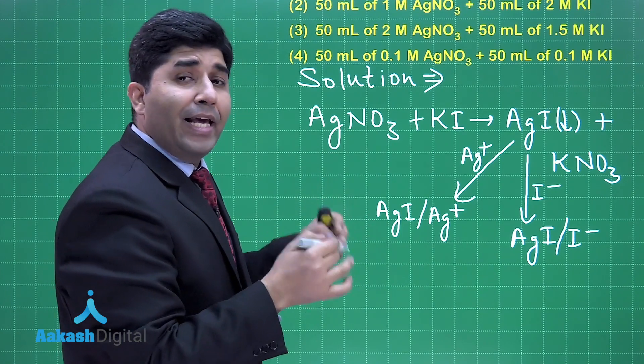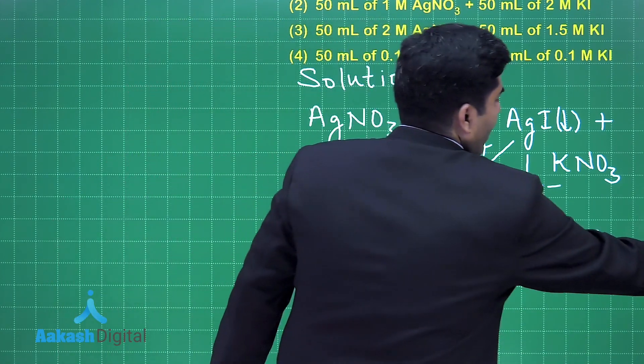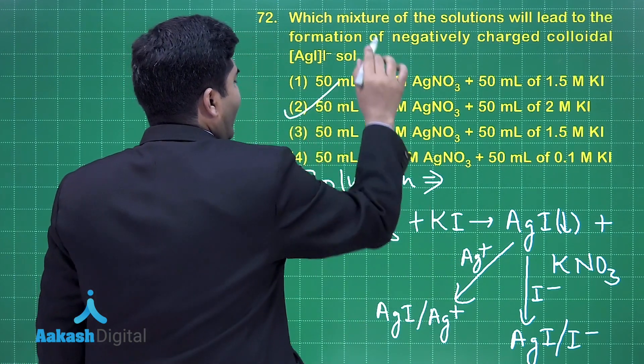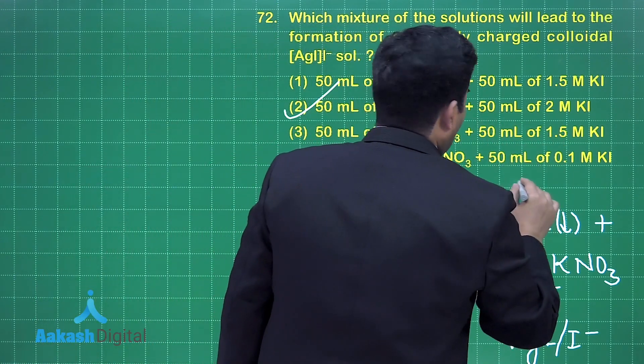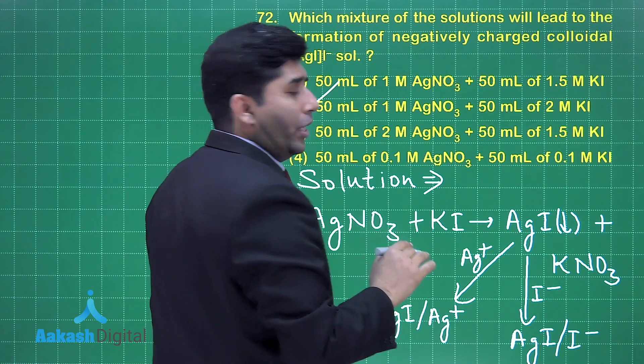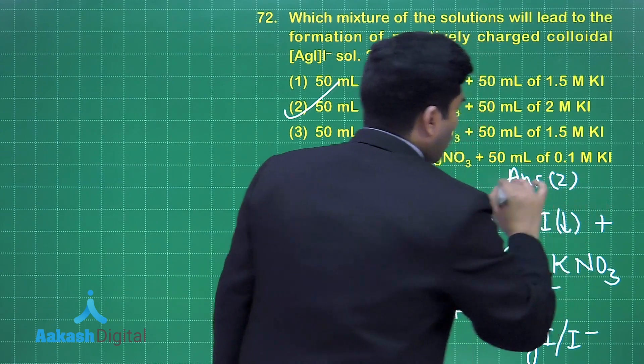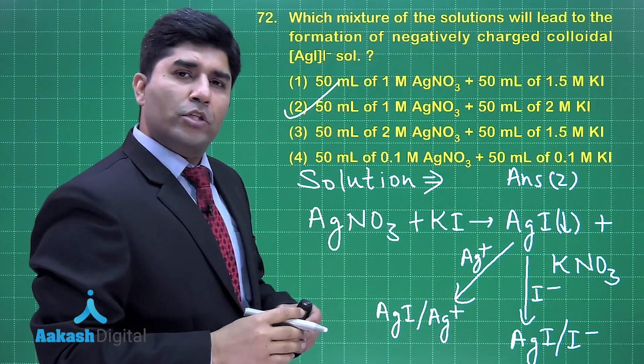So we have to check in which case KI is more. If we compare these four options, in the second option KI is more than that of AgNO₃. That's why our answer is option number two. Let's move on to the next question.